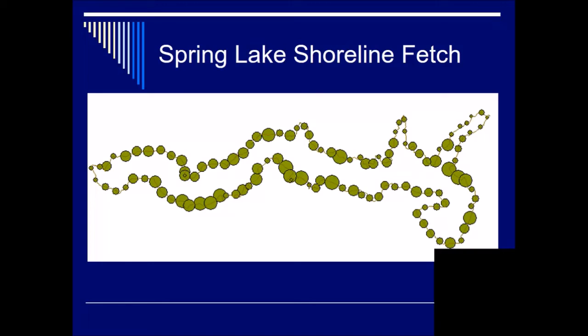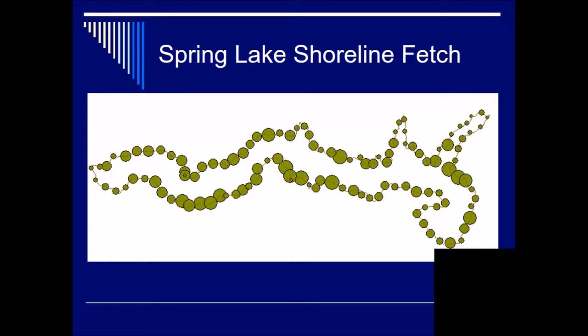Now there's a simpler definition of fetch that is sometimes used. And that's just the longest length parallel to the prevailing winds. And so this does not look at each point on the lake and how relatively windy it is. This just says, what are the prevailing winds in an area, and what's the longest direction of open water in parallel to those prevailing winds. And that tells you how relatively windy this lake is to another lake. So if you're comparing two different lakes, you want to use the second definition.